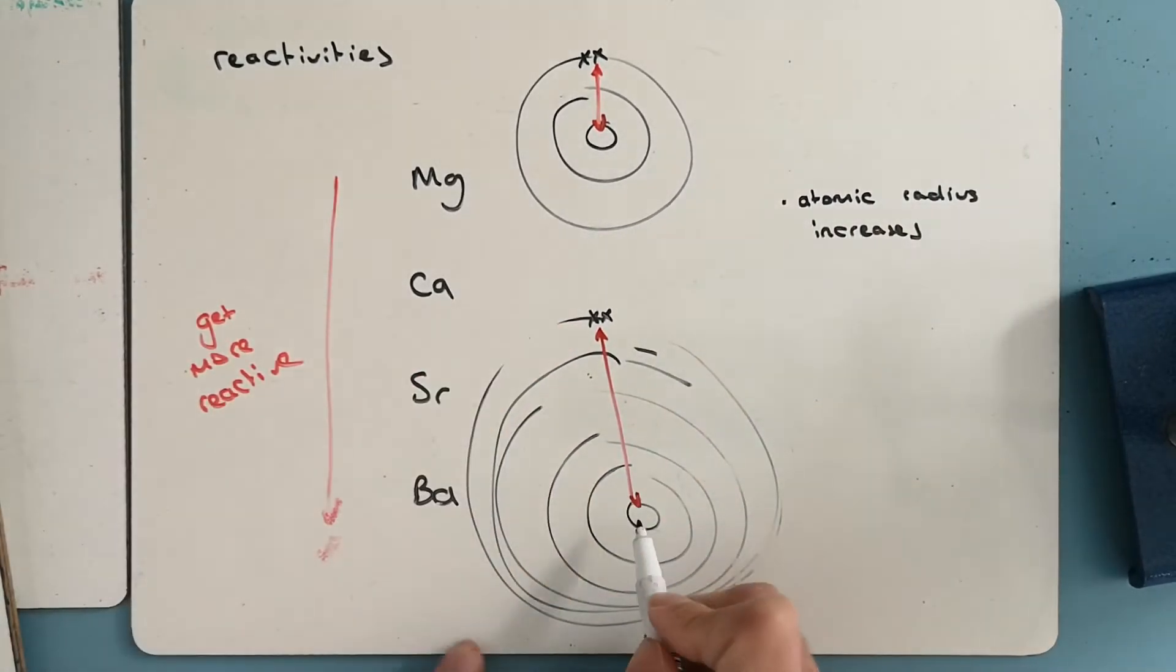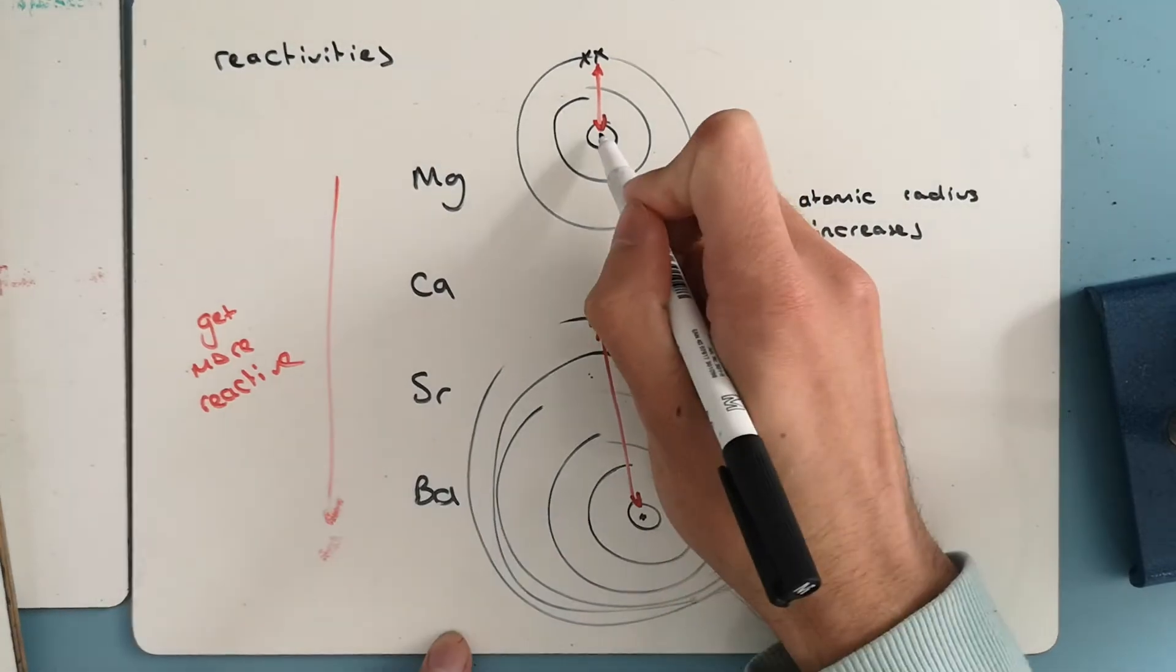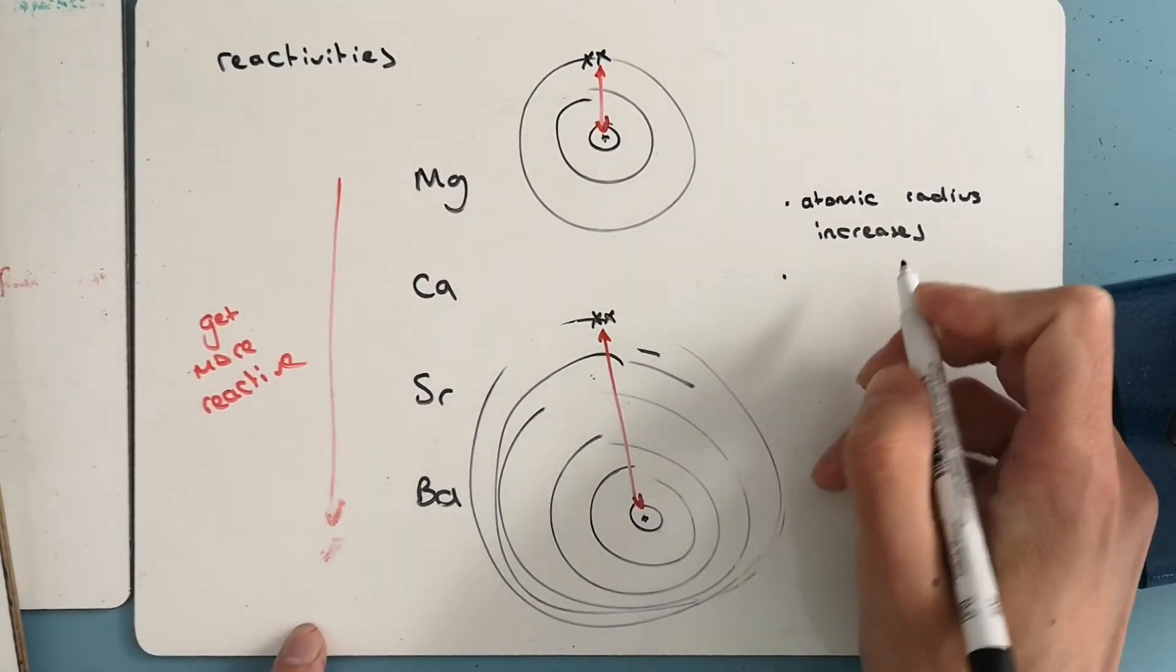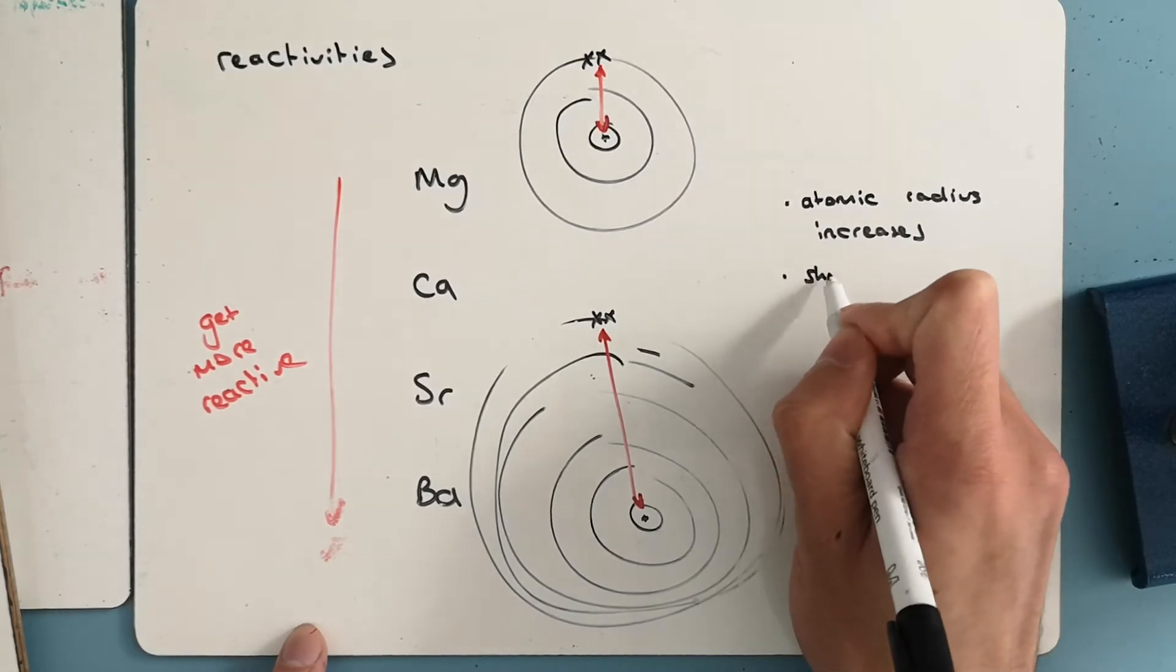So as you go down the group, atomic radius increases. So these electrons are attracted to the protons right at the centre, these ones are further away. Also, shielding increases.